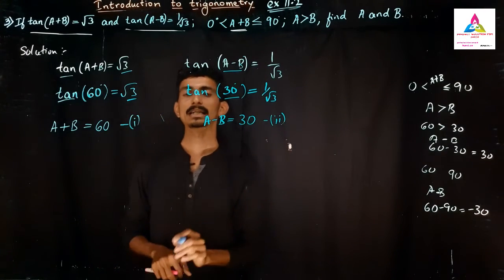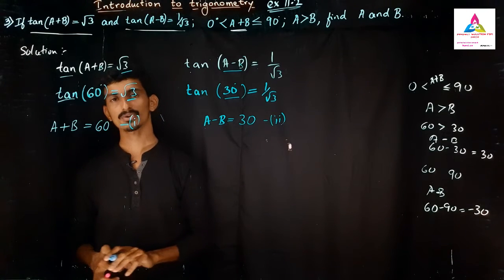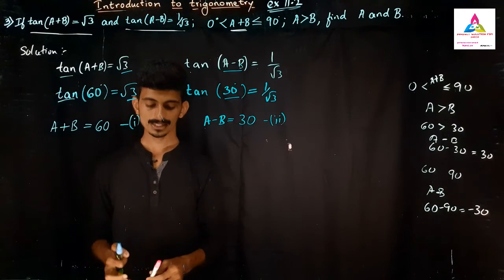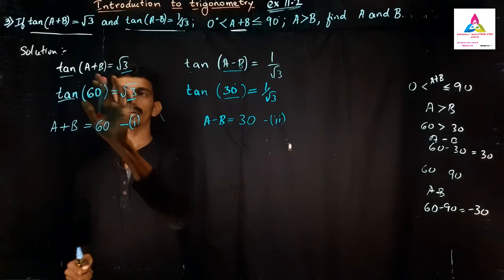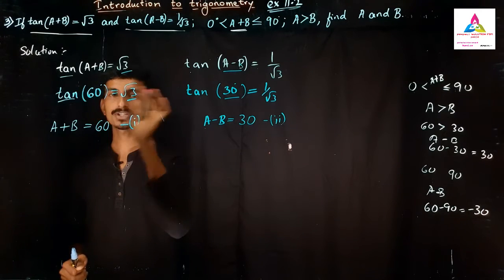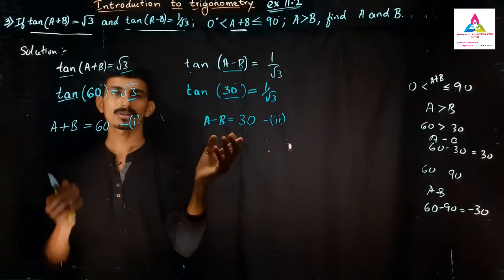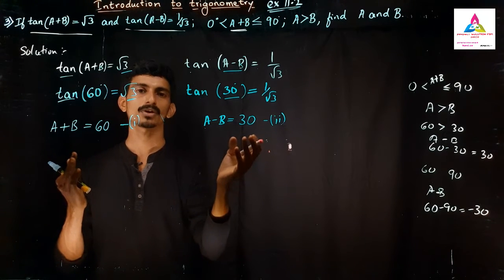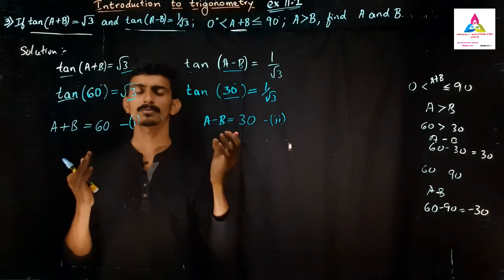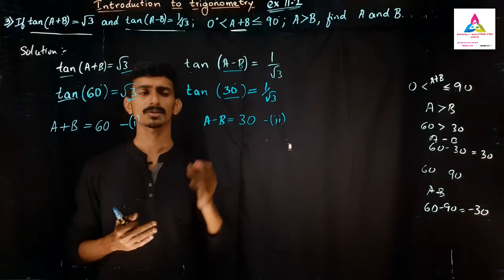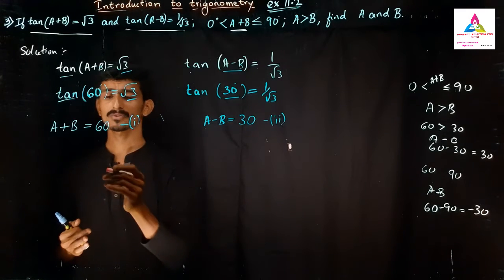So now it has become a linear equation. So now we can solve this linear equation very easily. One thing I have to remember, A+B value is 60 now, and A-B value is 30. So depending on you which method you want to follow: substitution, elimination method, or cross multiplication method. Whichever method you want, you can solve this.